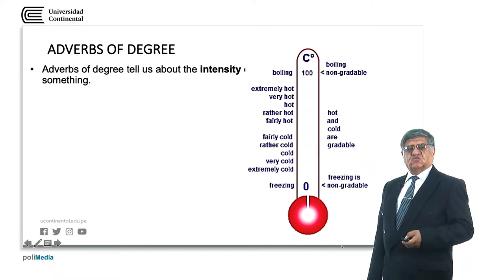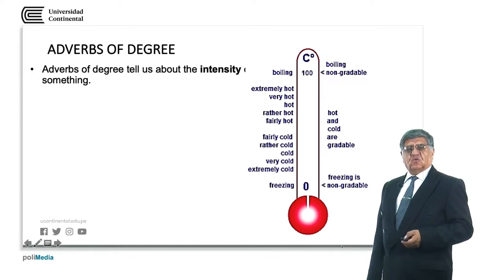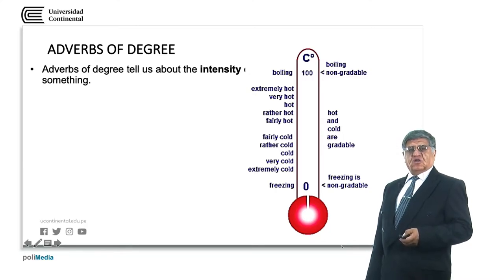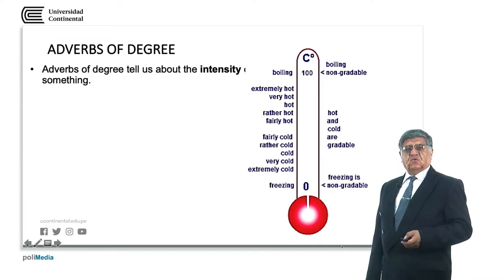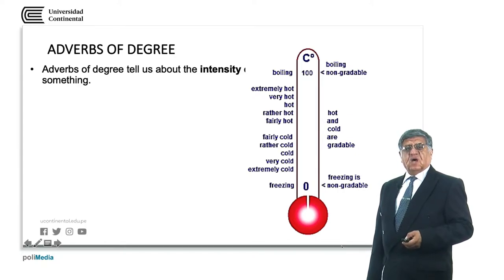We can say extremely hot when it's near the boiling point, or fairly cold when it's almost hot. Between them we can say very cold, cold, rather cold, or fairly cold. And the same with hot — when it's almost cold we say fairly cold, rather hot, more hot, hot, very hot and extremely hot, near the boiling point.